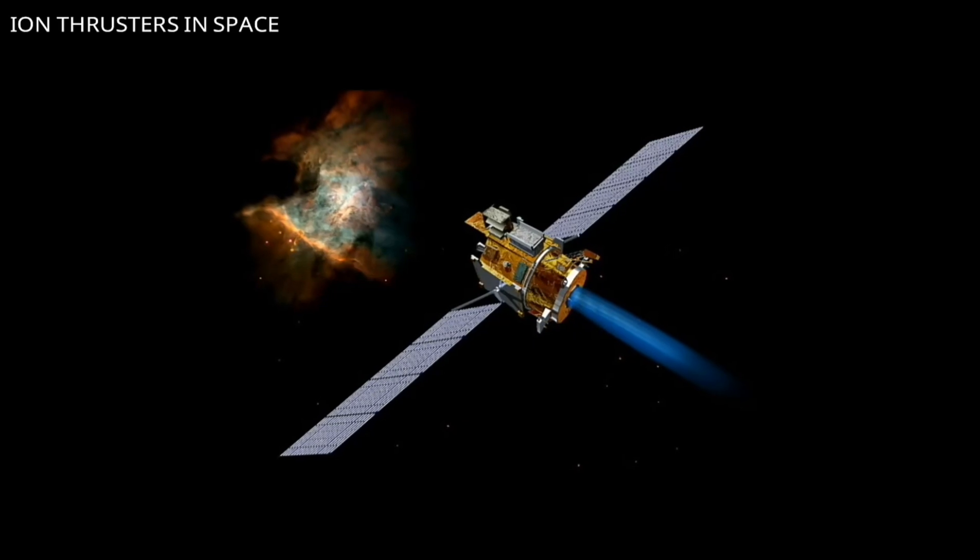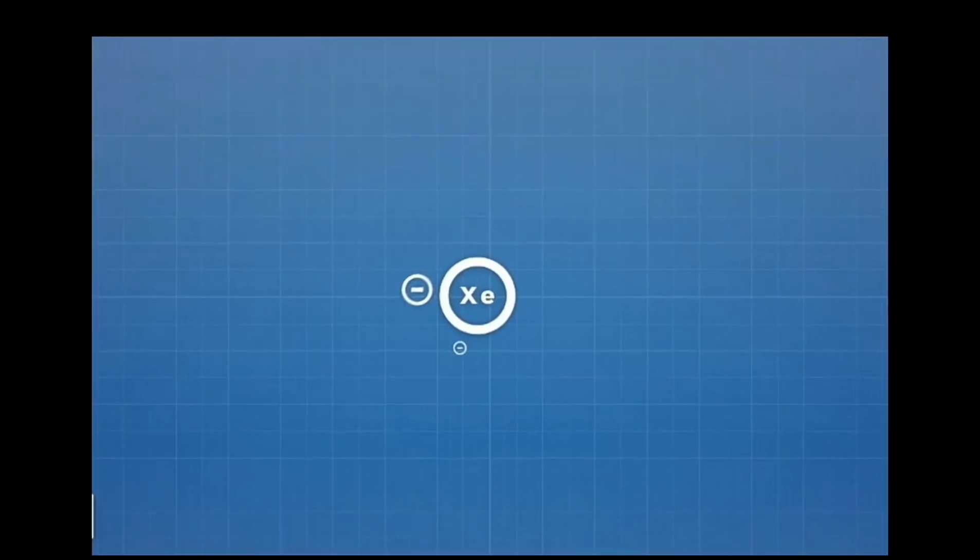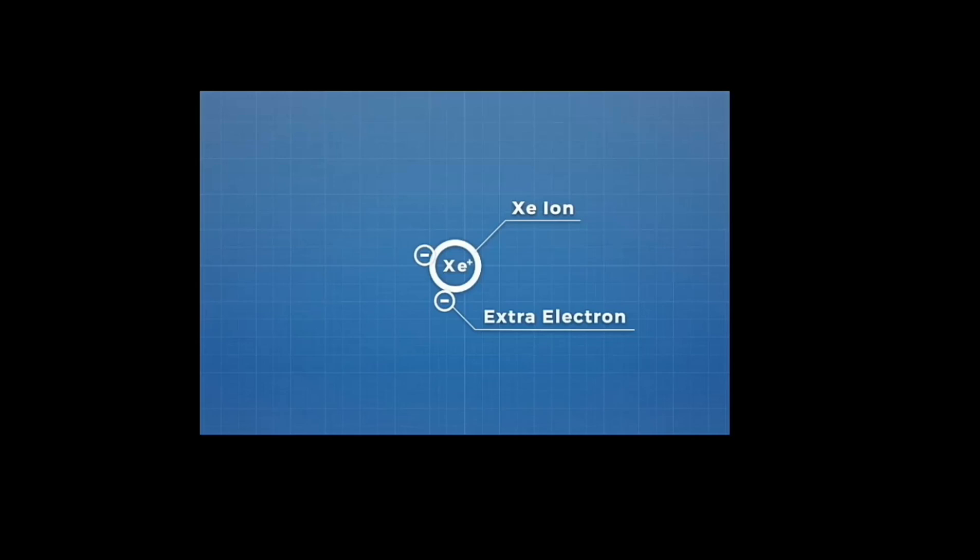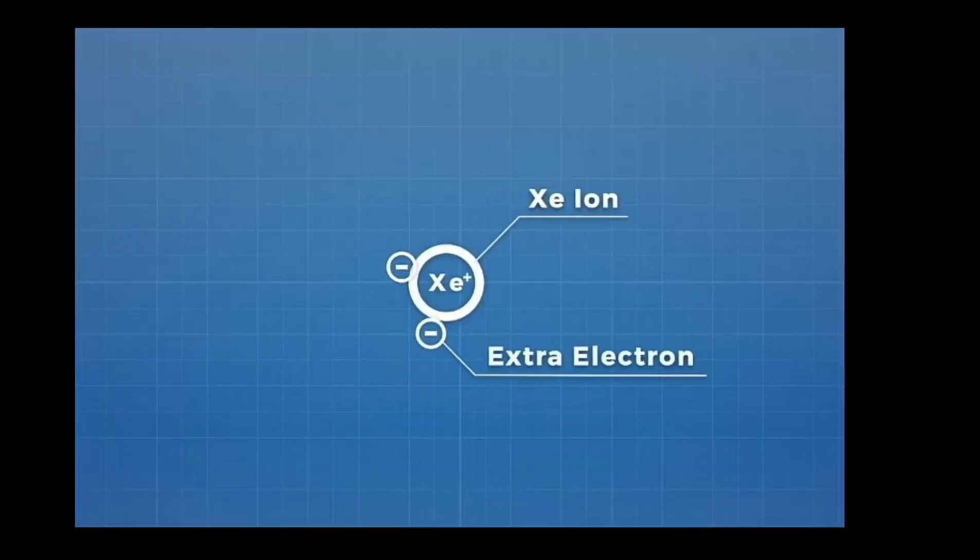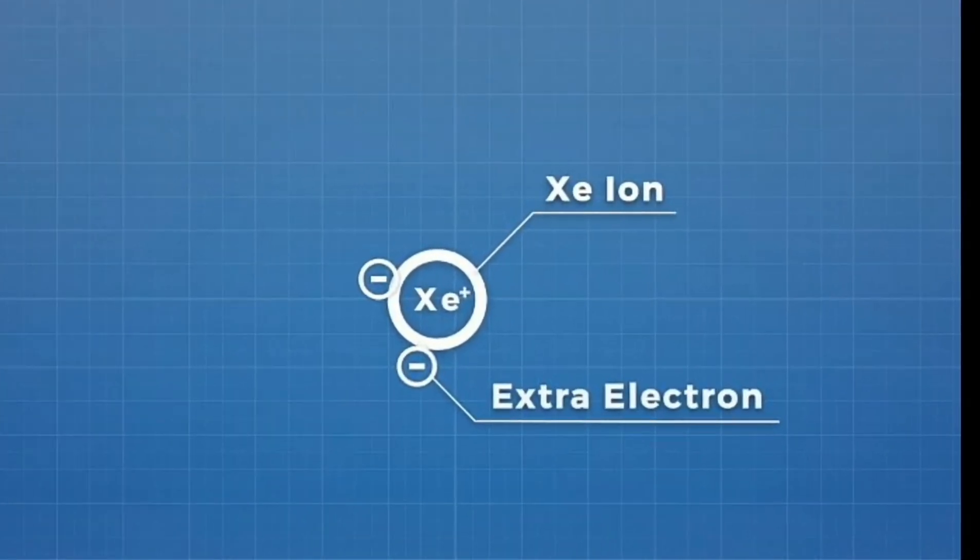So how does an ion thruster work? An ion thruster ionizes the propellant by adding or removing electrons to produce ions. Most thrusters ionize propellant by electron bombardment. A negative charge collides with a neutral charge, releasing an electron from the neutral charge, which will be resulting in a positive-charged ion.